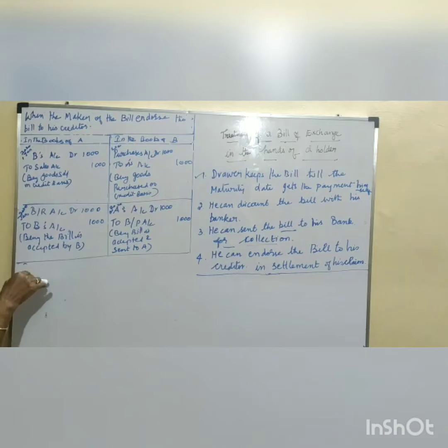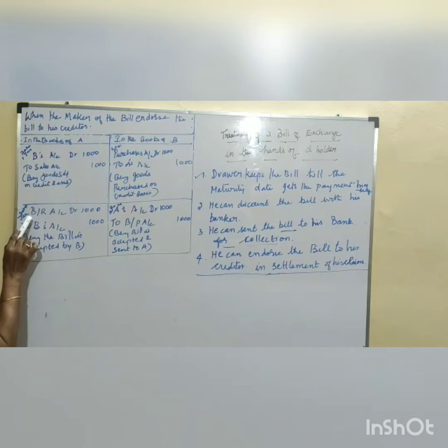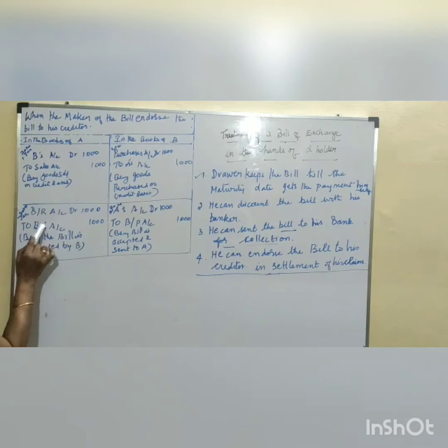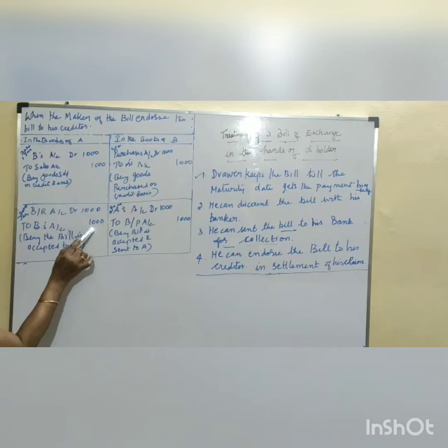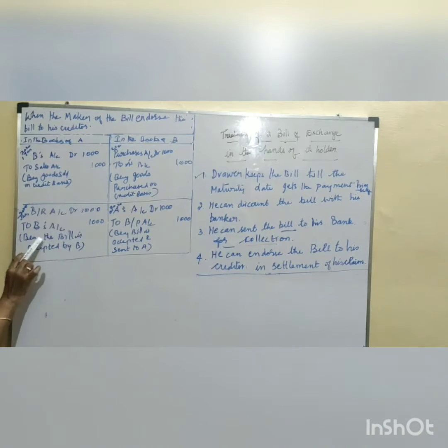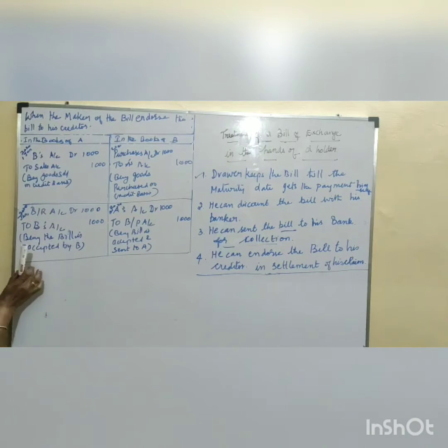At the time of acceptance and getting the bill back, bills receivable account 1000 rupees is debited to B's account 1000 rupees, being the bill is accepted by B.